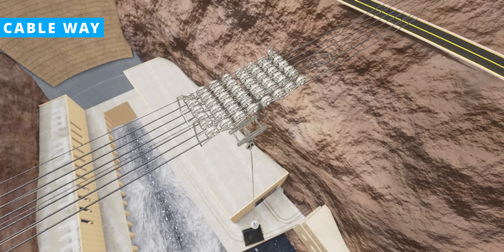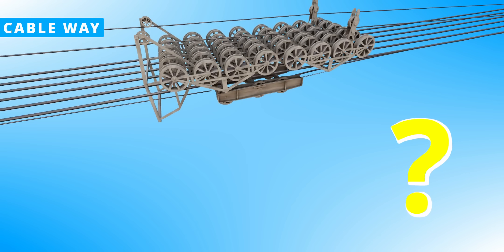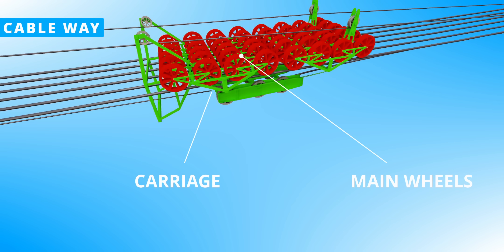It looks weird, right? How are all these wheels able to stand straight without falling down? You can see that all these main wheels are connected via a carriage.